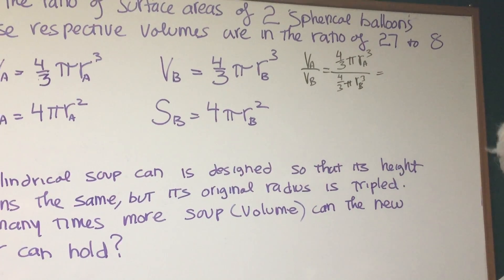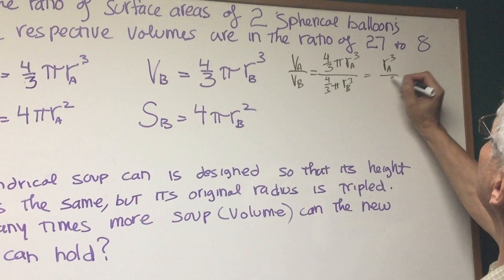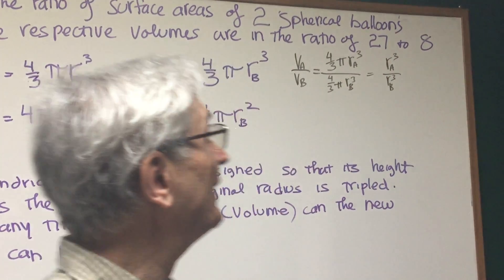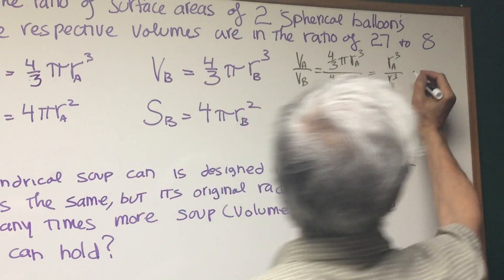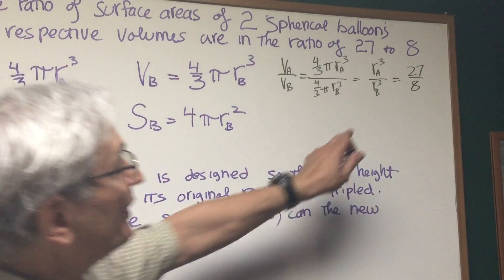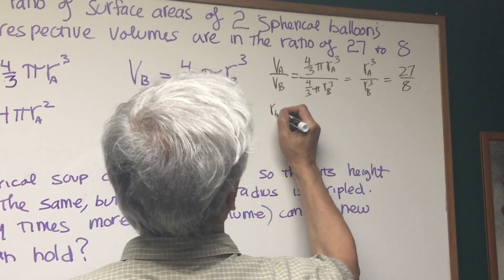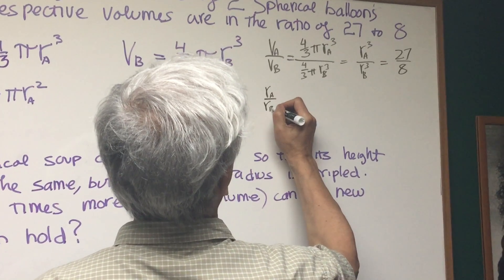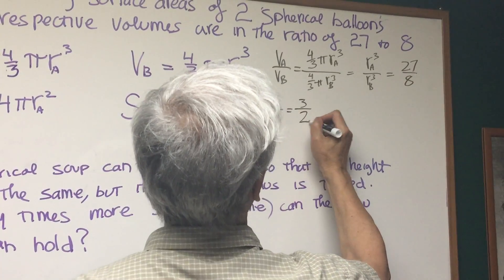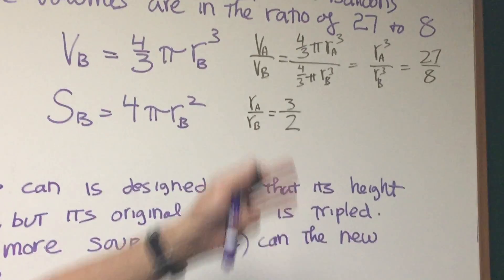Well, the 4/3 and the π cancel out, so what we're really left with is the ratio of the cubes of the radii, the two radii. So what does that give us? We know that the ratio is equal to 27 to 8. So very conveniently, we can take the cube root of both sides, and we know that the ratio of radii is going to be the cube root of 27 is 3, the cube root of 8 is 2. So we know that the ratio of their radii is 3 to 2.